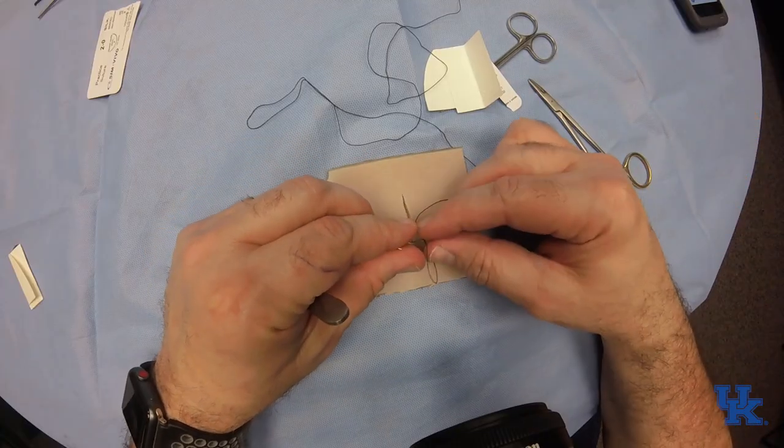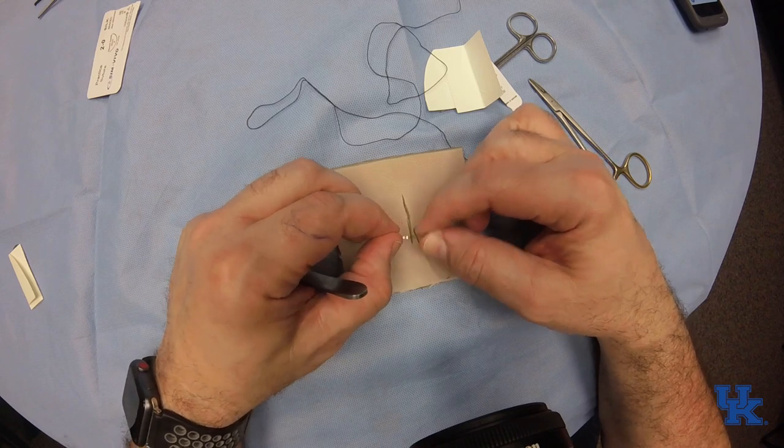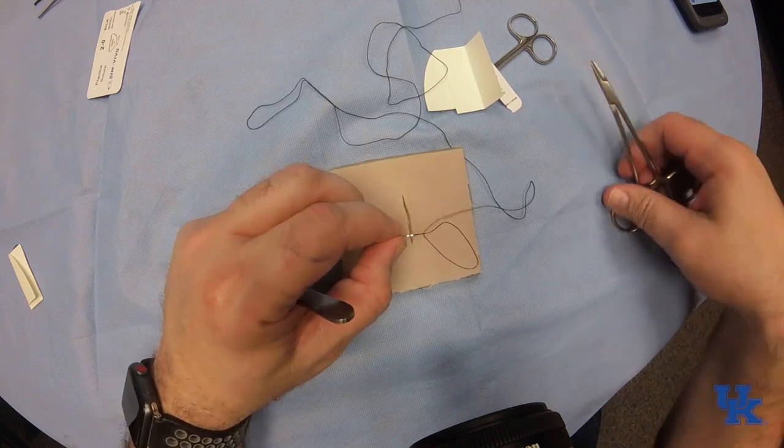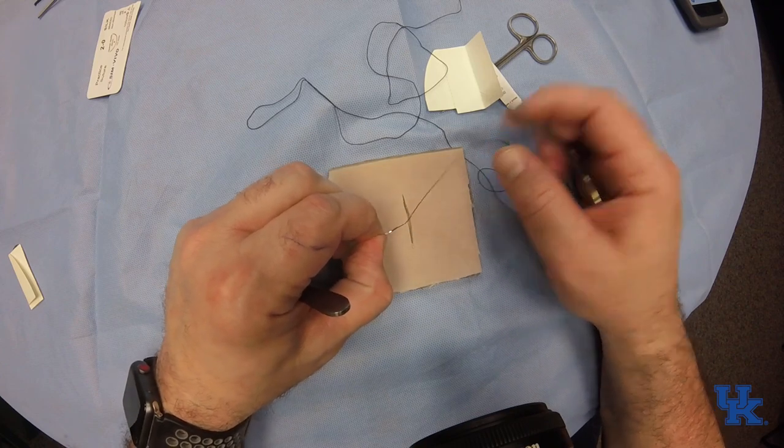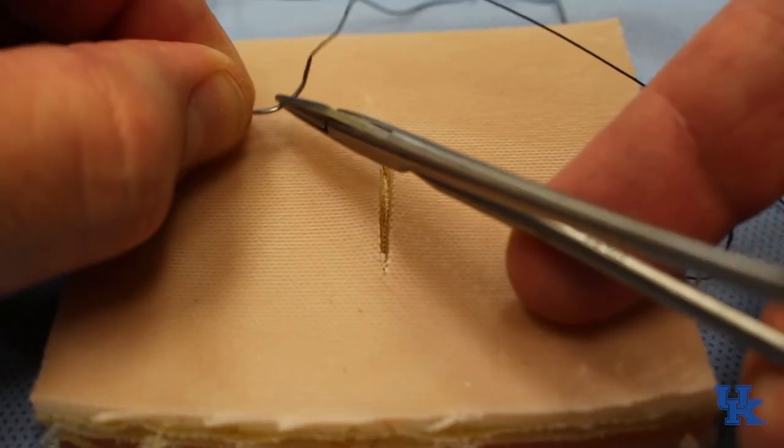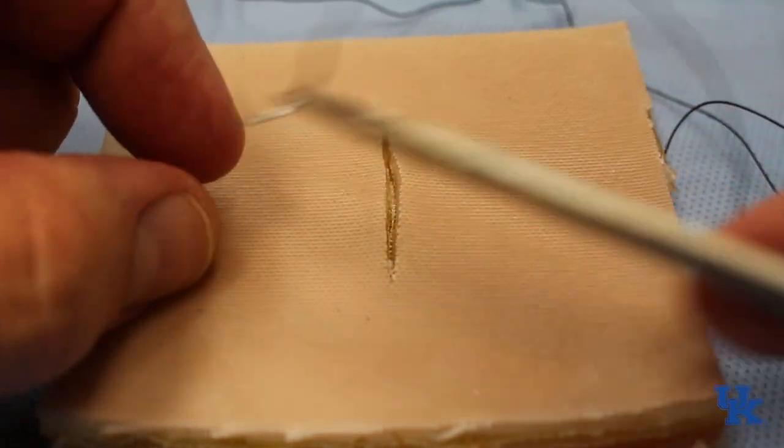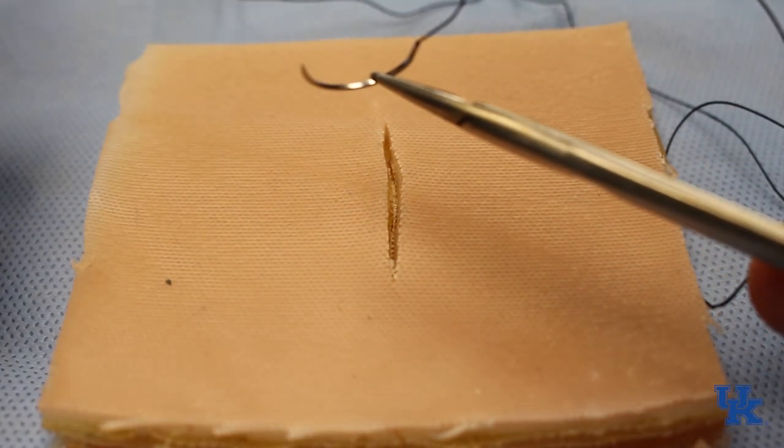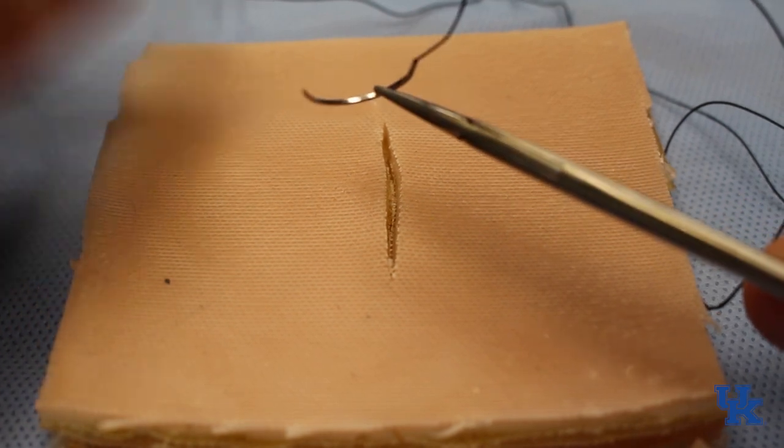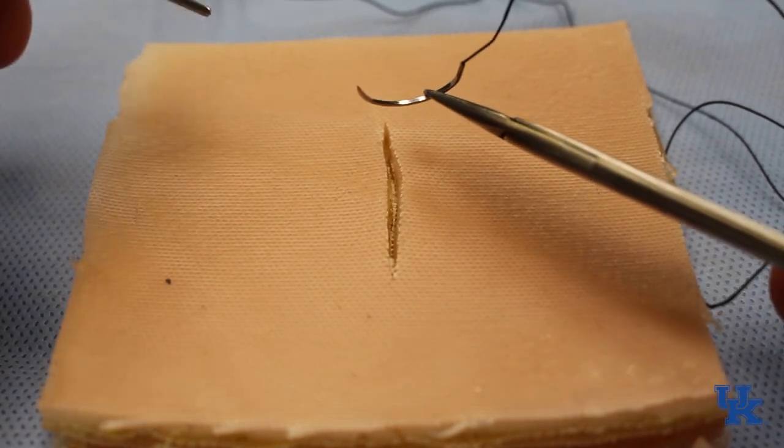So let's look at the suture and the needle. The needle has a curve on it. There are different size curves, there are different size needle ends, and they correspond to the size and tensile strength of the string attached. When you grab a needle, you grab it right at the center of the needle, the curve. That's where it's maximally advantageous to throw your stitch.